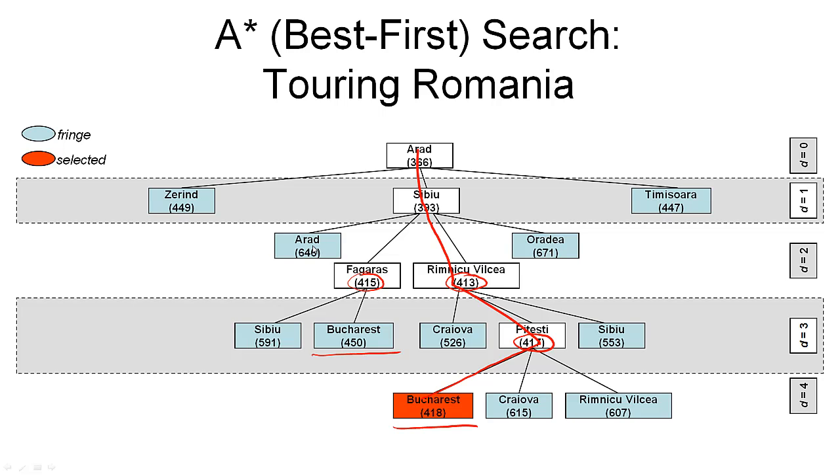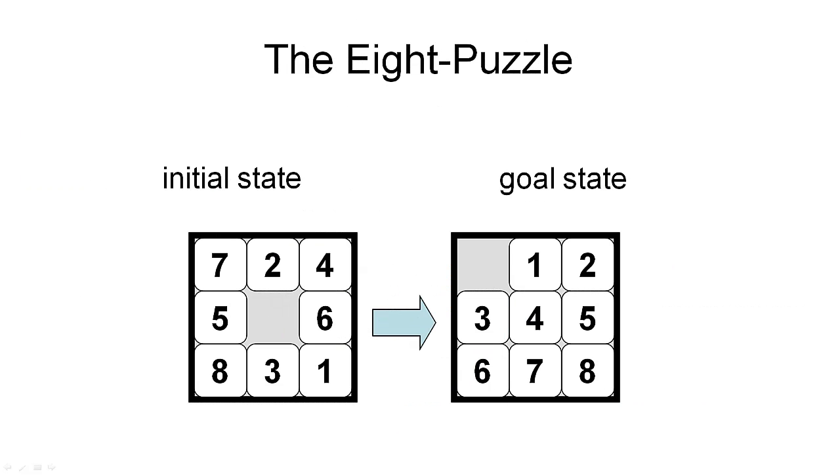So A* gave us an optimal path to the goal node, better than what greedy best-first search found. However, you can also see that this tree contains quite a few more nodes than the tree that was generated by greedy best-first search. And that means A* search is generally a little bit slower than greedy best-first search. And unfortunately, this is often the case. The touring Romania example is not very interesting because it is a relatively small search space. So here's something that has a slightly bigger search space, the 8-puzzle.